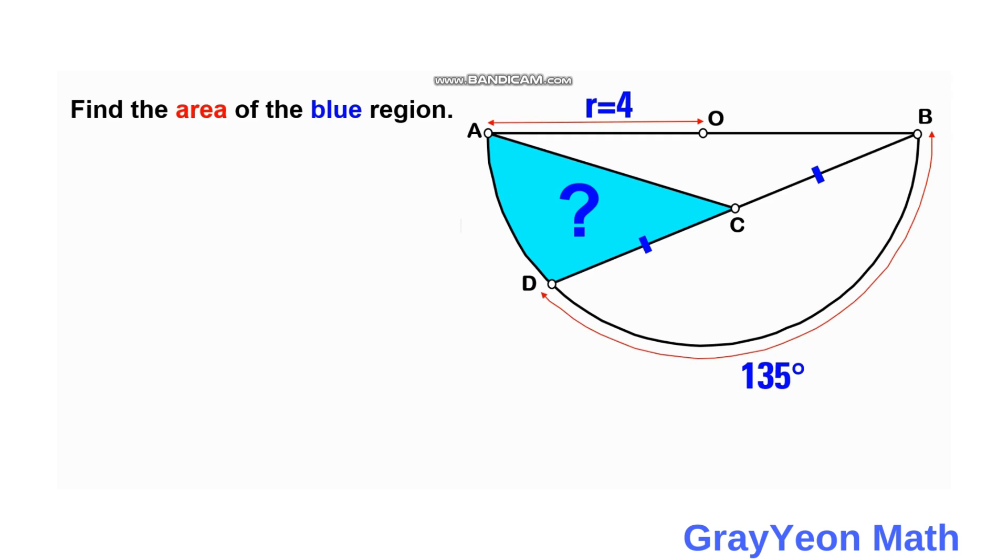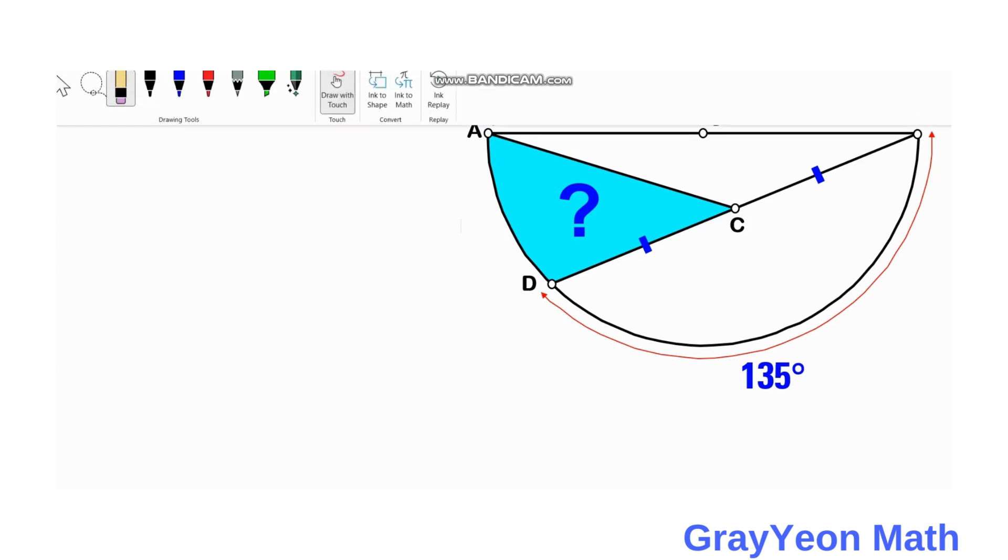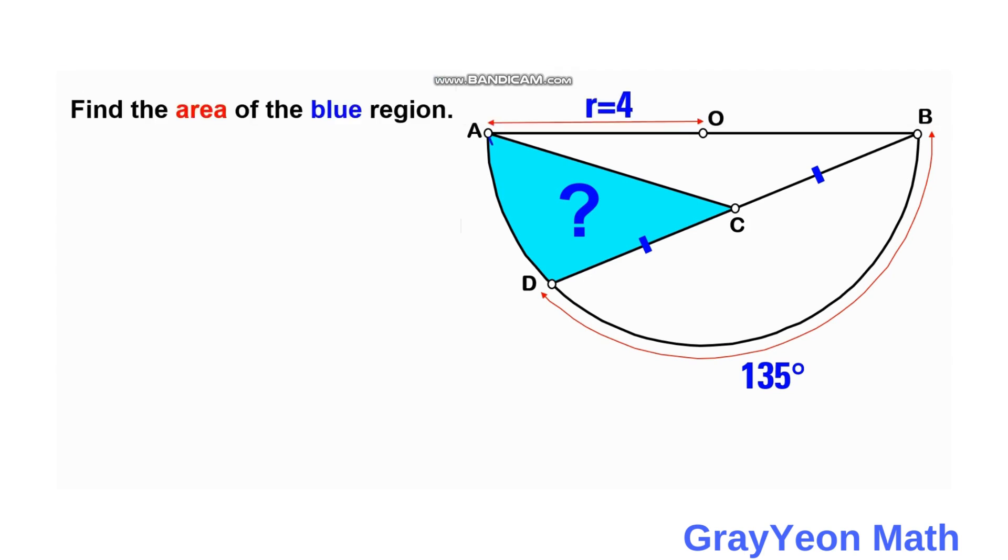Okay, so first thing that we may notice is we can actually draw a line from point A to point D. And we complete this to be a right triangle because of Thales' theorem. And the segment AB serves as the hypotenuse of this right triangle.